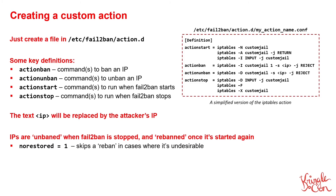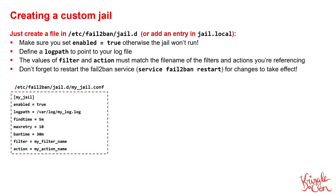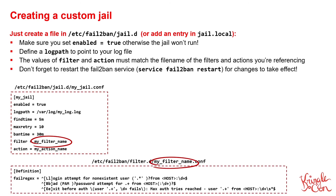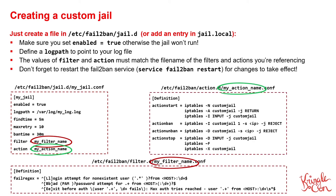To then actually use your custom filter or custom action, you need to create a custom jail — this is as simple as creating a new file in the jail.d folder that follows the format shown on screen. Make sure that you've set enabled equals true, otherwise Fail2Ban will not enable your jail. You need to define logpath to point to the log file that you want Fail2Ban to monitor, and you can set custom parameters for findtime, maxretry, and bantime. You also need to reference the particular filter that you want applied to the logpath, and the list of actions that you want taken. Just make sure that your filter and action names match the name of the config file created in the action.d and filter.d folders.